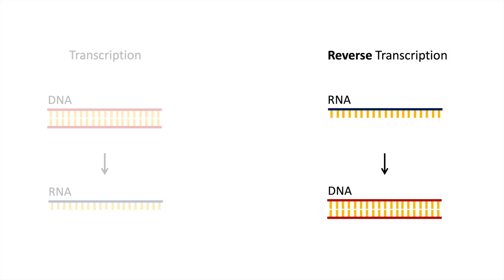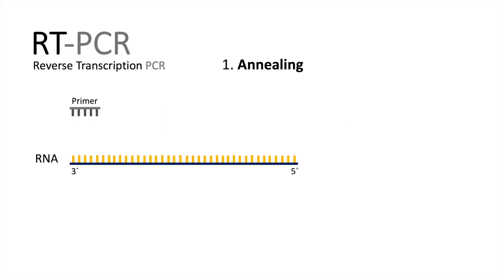And how this is done I will show you now in detail. So first we split the RT-PCR into two steps. First we have the reverse transcription. And what happens here is that we need the primer to anneal to the RNA template.